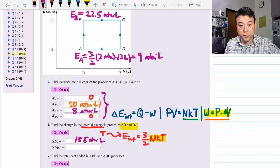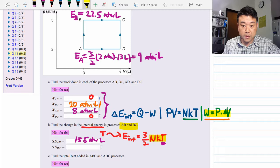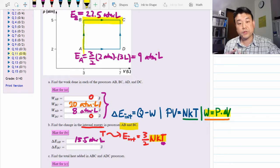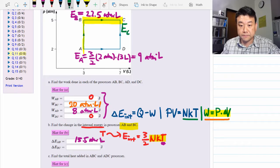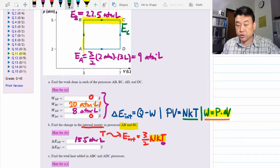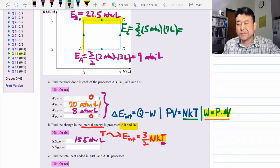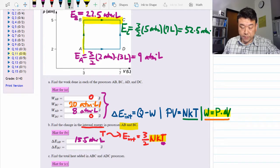And the change in internal energy from B to C is also similarly simple. Because for internal energy, once again, all you care about is the temperature. Now there are some details that are different. Going from A to B, there's zero work done. Going from B to C, there is work being done. But those details don't actually matter for the internal energy. For the internal energy, all that counts is the temperature. So we do the exact same thing for internal energy at point C. So it's three halves times pressure times volume. Or working out all the numbers, I think 52.5 atmosphere liter. So the difference here between B and C is then 30 atmosphere liter. That's it.